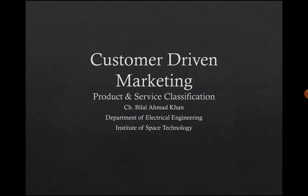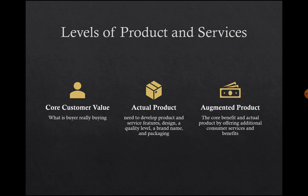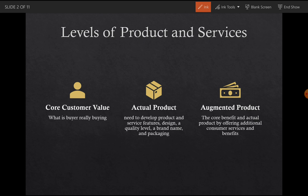We have discussed how you can actually select your particular segment, from which you can target a specific market for your product or services, how you can differentiate your product to develop a physical and perceptual belief about the product or service to give it a certain position in the minds of your potential consumers. We also discussed how these four coordinates — segmentation, targeting, differentiation, and positioning — can actually develop a certain value within the minds of consumers.